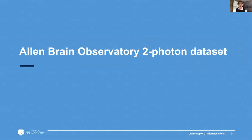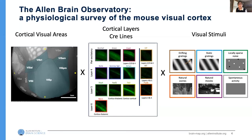I'm going to tell you about our two-photon dataset. Two-photon is a data collection method where we use calcium indicators and a two-photon microscope to image the activity of large populations of neurons simultaneously. We set out to create a survey of physiological activity throughout the mouse visual cortex. A lot of the previous data the Institute has generated has been about gene expression or cell identity, and here we want to look at the activity of neurons so we can start asking questions about the computations going on in these neural circuits.